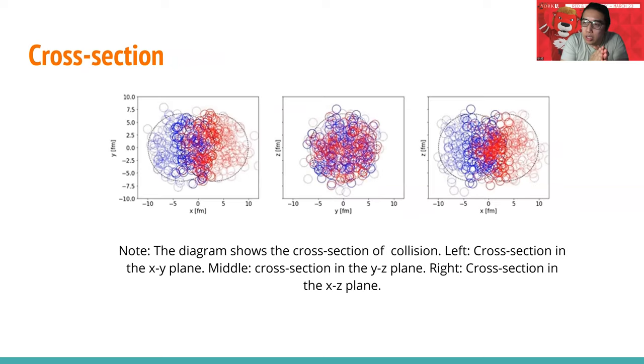These three diagrams are generated to show the cross-section of the two atom collision. In the diagram, you can see that the blue circles are nucleons from the left atom, and the right circles are coming from the right atom. The nucleons in the center, which are not in dashed lines, are the participants, which means they are colliding with some nucleons from the other atom. The circles in the dashed lines outside didn't strike with some nucleons from the other atom. We call all these nucleons not in dashed lines in the middle the participants. The total number will be called the number of participants.